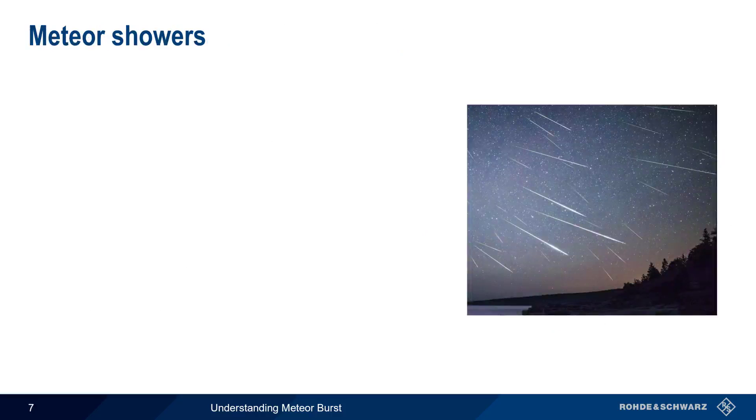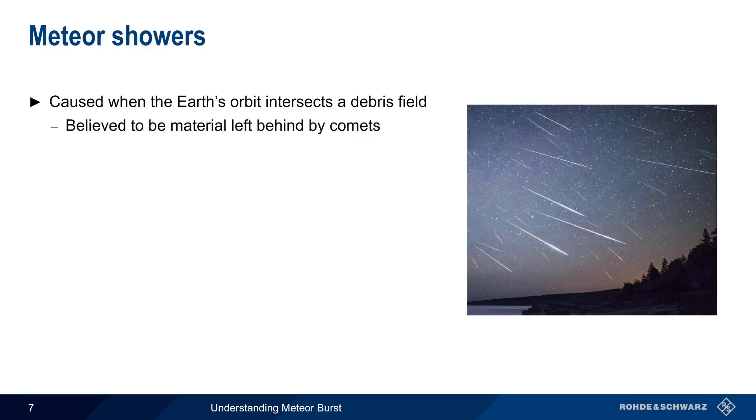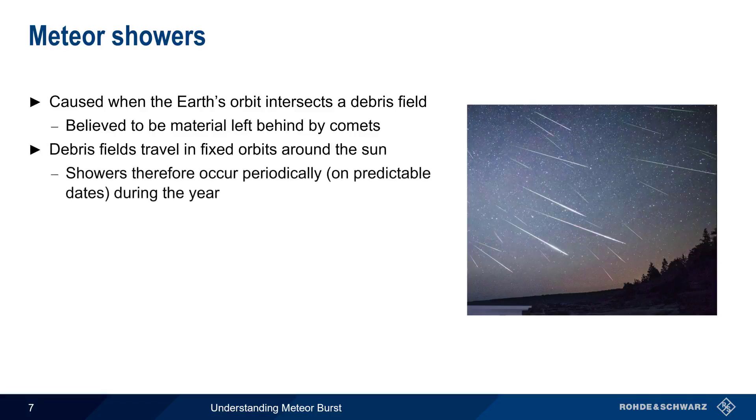The other type of meteors are those that are part of a meteor shower, which is created when the Earth moves through a field of debris. It's generally believed that these debris fields are material left behind by comets. These debris fields travel in known, fixed orbits around the Sun, so the showers that they create occur periodically – that is, on predictable dates – during the year. One of the best-known and largest meteor showers are the so-called Persids, which occur every year in August.